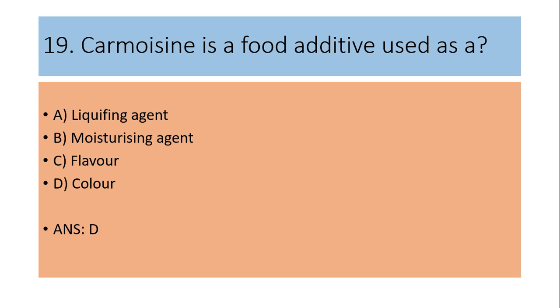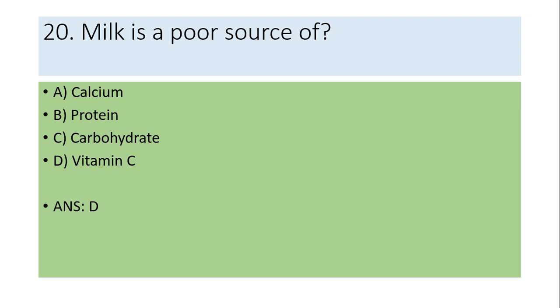Nineteenth question: Carmoisin is a food additive used as a liquefying agent, moisturizing agent, flavor, or color? It is used as a color. Answer is D.